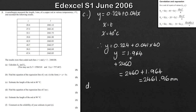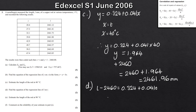For part d, we want the equation of the regression line of l on t. We don't need to redo all the calculations — we use our regression line y equals 0.324 plus 0.041x. Since y equals l minus 2,460 and x equals t, we substitute: l minus 2,460 equals 0.324 plus 0.041t. Adding 2,460 to both sides gives l equals 2,460.324 plus 0.041t.